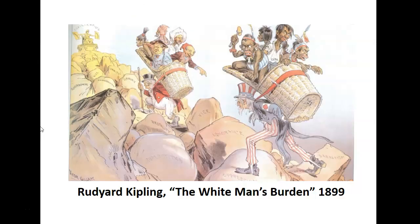I want to close out this first half of the lecture by talking about the philosophy of colonialism. Forces like social Darwinism, nationalism, and a sense of a civilizing mission animated and helped to justify colonial expansion in the late 19th century. Perhaps this is best typified in a poem by Rudyard Kipling. In 1899, Kipling wrote a poem called The White Man's Burden, which is reproduced in your Diker and Spielvogel textbook, illustrated here in a very poignant and telling illustration.